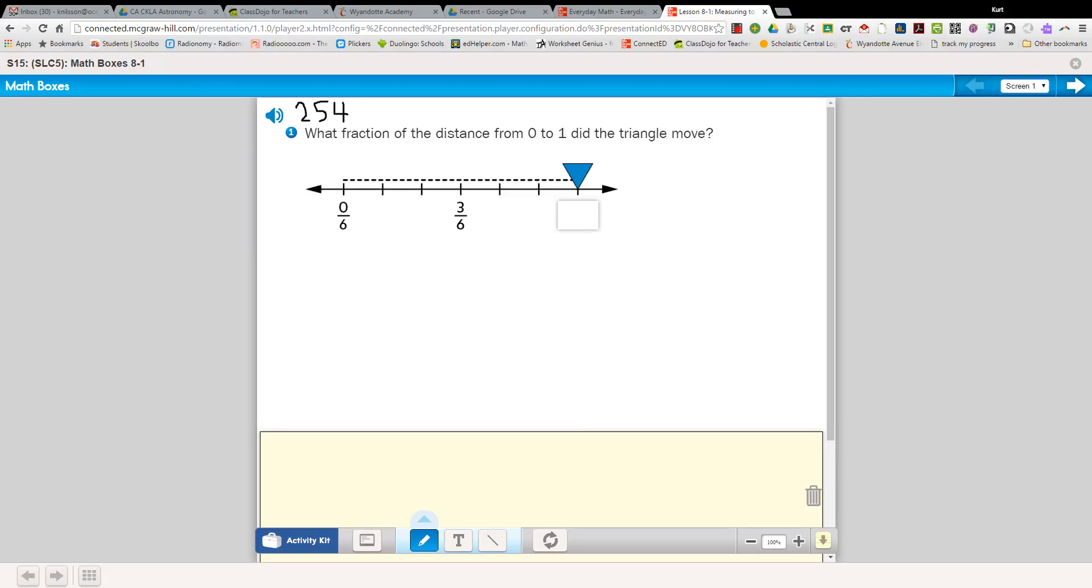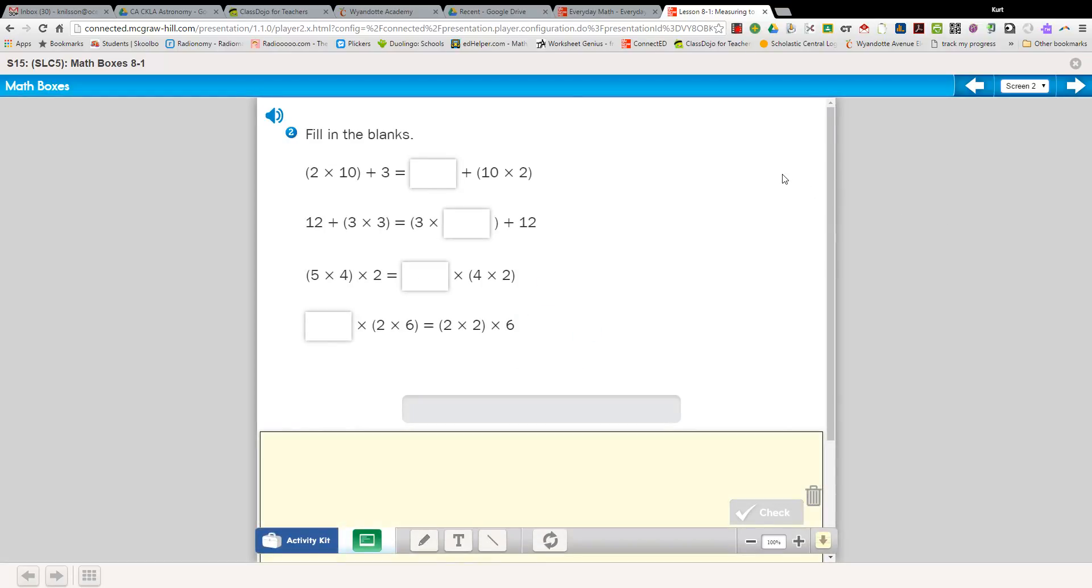Let's go to the next problem. Hmm, lots of boxes here. Fill in the blanks. 2 times 10 plus 3 is equal to some number plus 10 times 2. Well I notice here that 2 times 10 and 10 times 2 would equal the same thing. So something when you add it to 3 is going to be the same as some number added to what we started with. That sounds like it's going to be 3, but let's check and see if that matches. 2 times 10 is 20 plus 3 is 23. I'm going to write a little 23 up here to help me remember that this side of the equation is equal to 23.